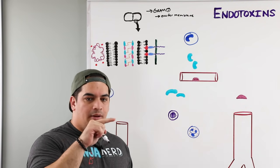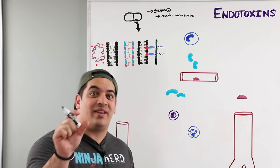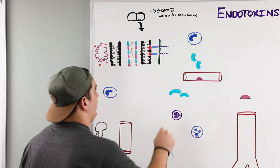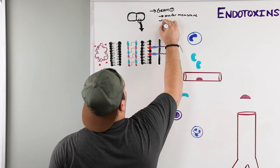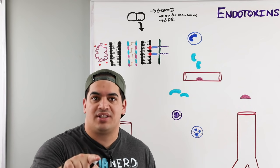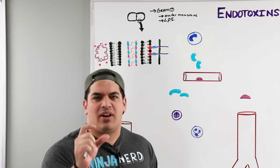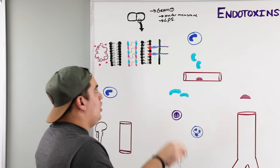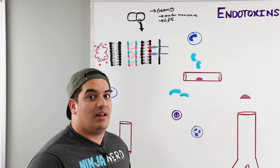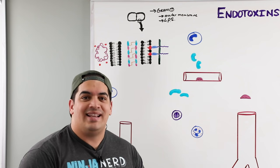Going back to what we covered in the structure and function of bacteria video — what is the name of that endotoxin found within the outer membrane of gram negative bacteria? It's called lipopolysaccharides, abbreviated LPS. The lipopolysaccharide has three components: lipid A, the core polysaccharide, and the O antigen. This is the structure that has the disease-causing, negative connotations. Endotoxins are produced by gram negative bacteria and found in the outer membrane.